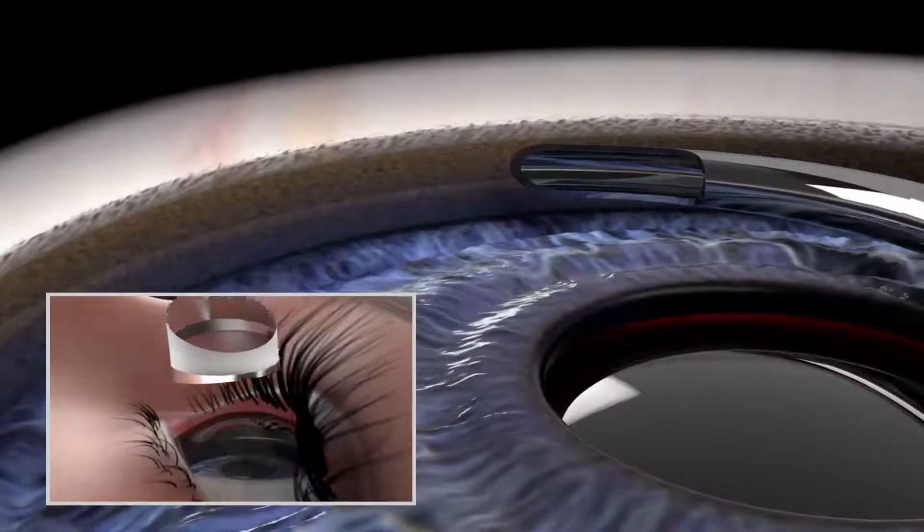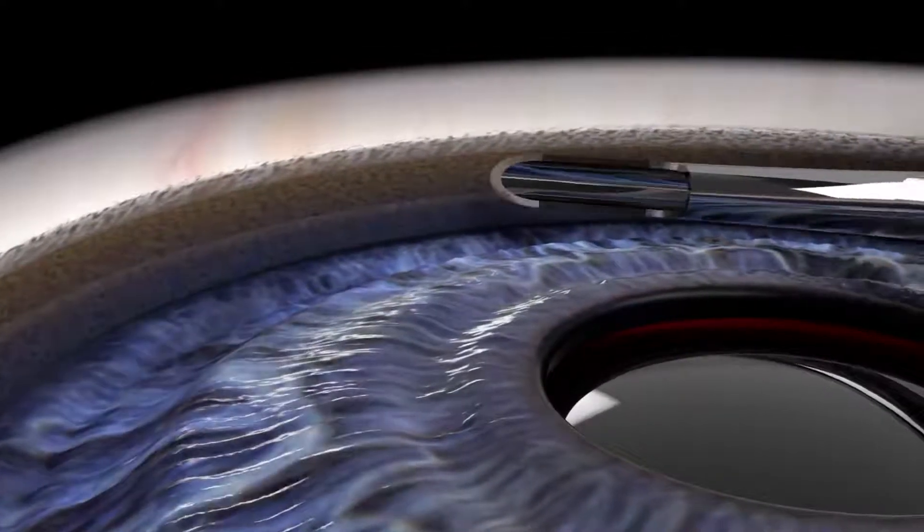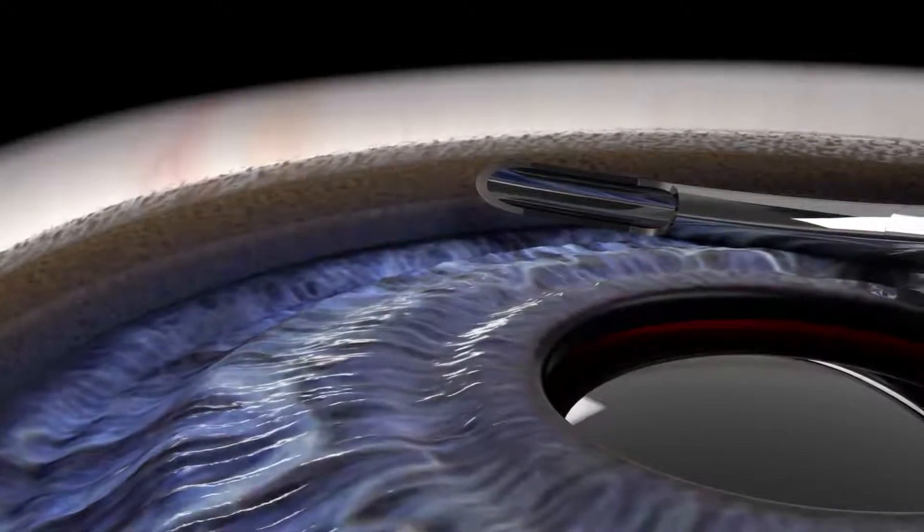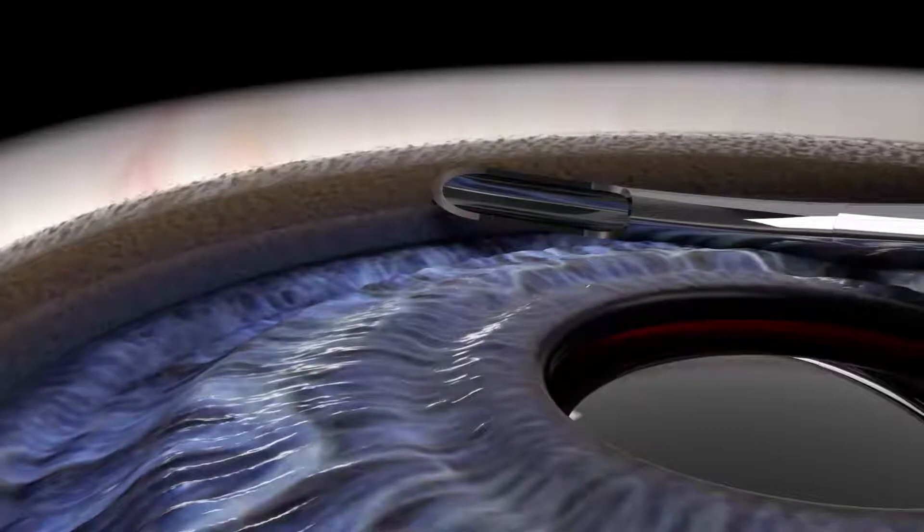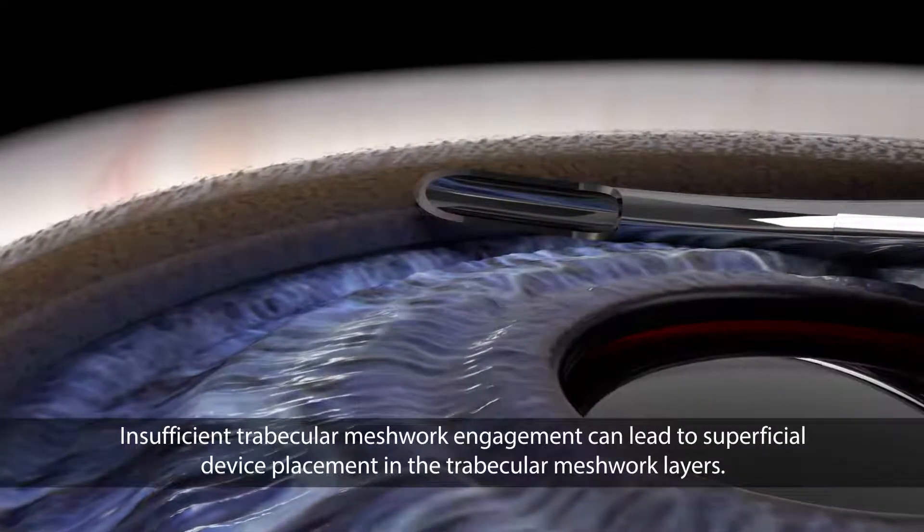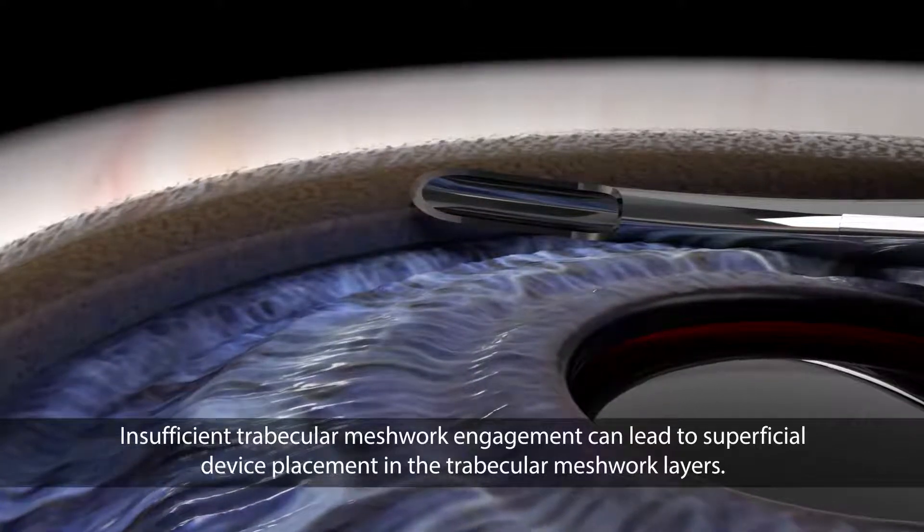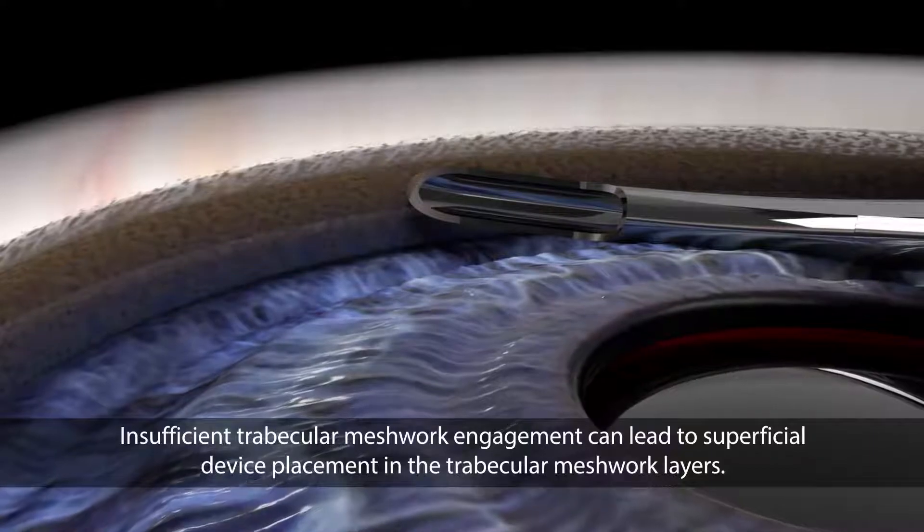Under gonioscopy, the beveled tip of the cannula should be tilted up approximately 15 degrees and then used to access Schlem's canal through the trabecular meshwork just above the scleral spur. Please note that insufficient trabecular meshwork engagement can lead to superficial device placement in the trabecular meshwork layers.